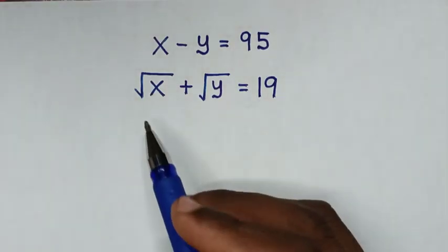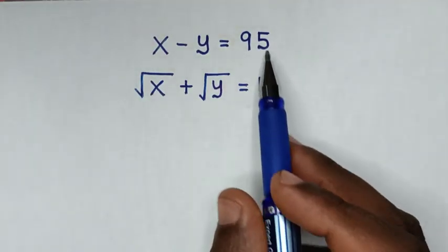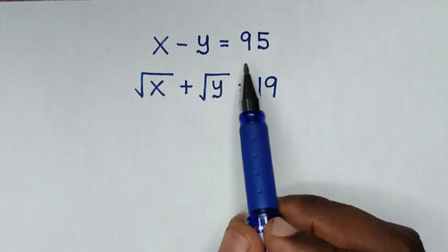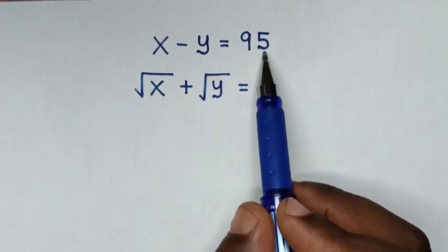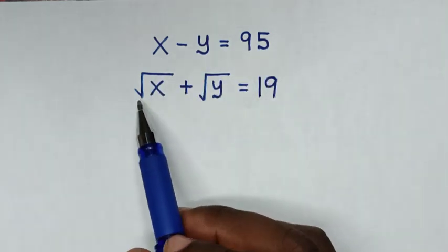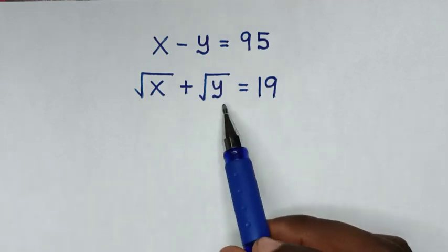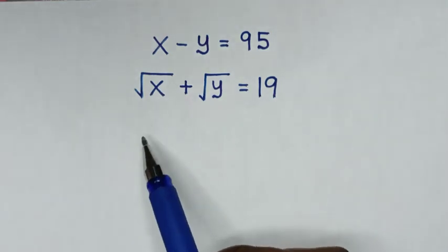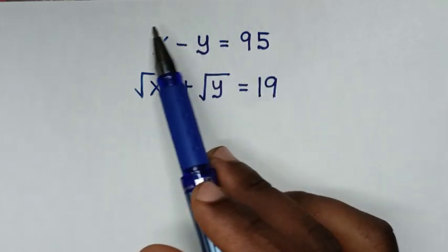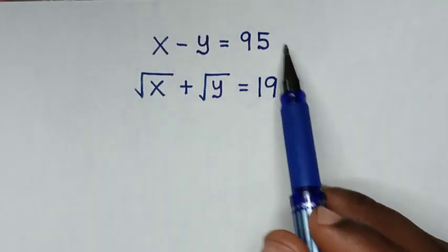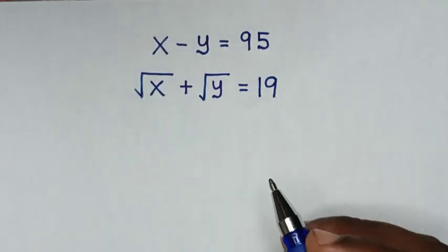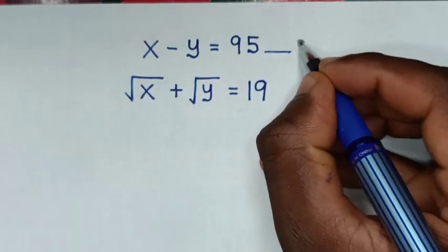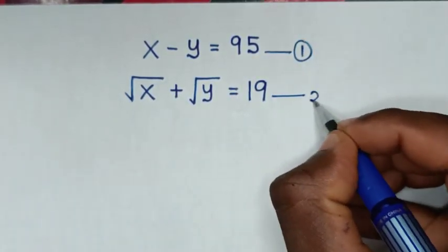Hello, you are welcome to solve this math problem. From the first equation: x minus y is equal to 95. Second equation: square root of x plus square root of y is equal to 19. We need to find the value of x and y from these two systems of equations. We let this equation 1 and this equation 2.